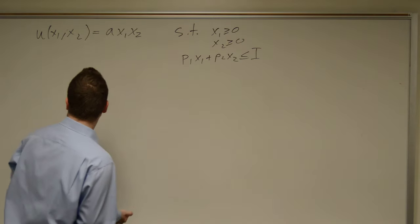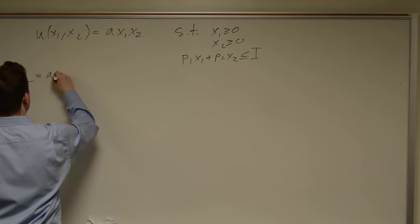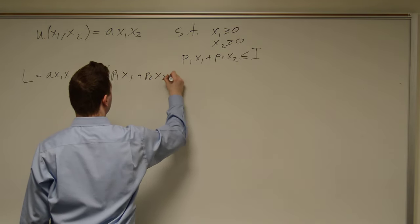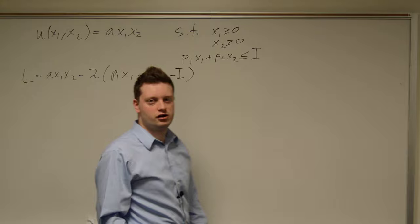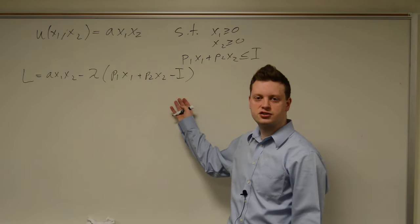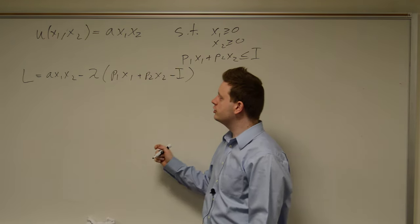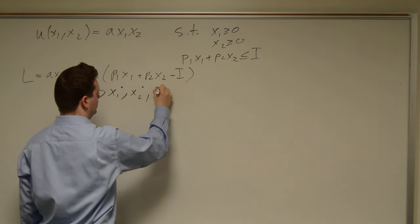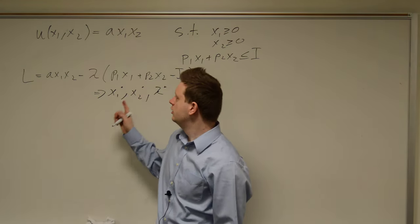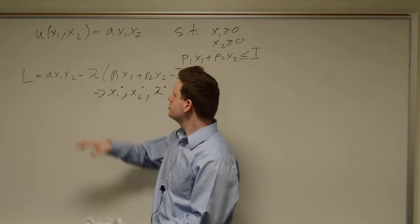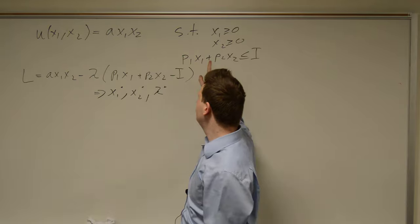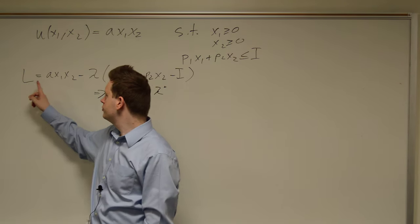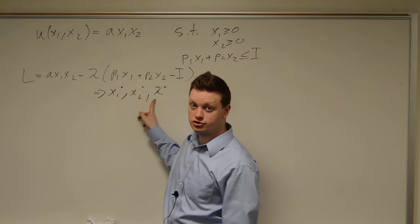Let's set up our Lagrangian: L is equal to a·x1·x2 minus λ·(p1·x1 + p2·x2 − i). Based on this, we can set up first-order conditions, which will allow us to get x1 star, x2 star, and λ star. We always need λ star as well, because we transformed this two-variable constrained maximization problem with one constraint into a three-variable unconstrained maximization problem in x1, x2, and λ.